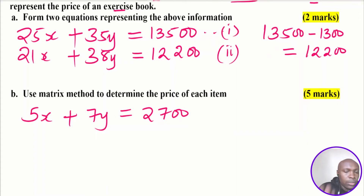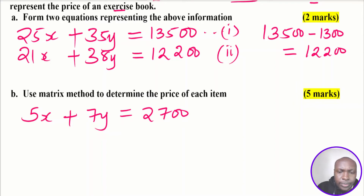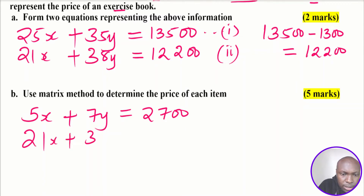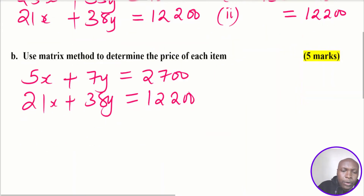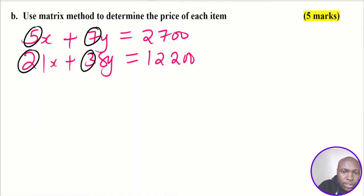For the second equation 21X + 38Y = 12,200, there is no common factor to simplify it, so we leave it as is. We then extract the coefficients of X and Y from both equations to write them in matrix form.